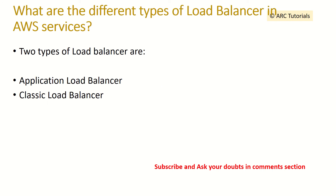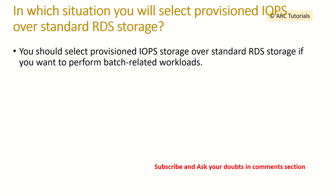What are the different types of load balancers available in AWS? The different types of load balancers are Application Load Balancer and Classic Load Balancer. In which situation would you select provisioned IOPS over standard RDS storage? You should select provisioned IOPS storage over standard RDS storage if you want to perform batch-related workloads.